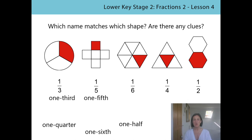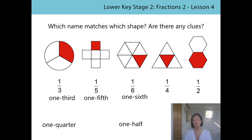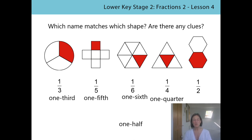Next shape, we've got six as our denominator, and we want to spot the name that has got a very similar sounding word in it. It's going to be one sixth, isn't it? And then the next shape - this has got a denominator of four, and we're not going to be able to use the sound. These last two are actually quite tricky, but you probably recognise them already. If a whole is divided into four equal parts, we talk about it as one quarter. And if the whole is divided into two equal parts, each one is one half.